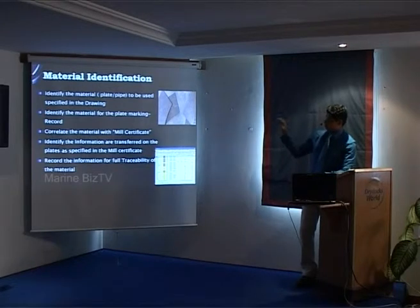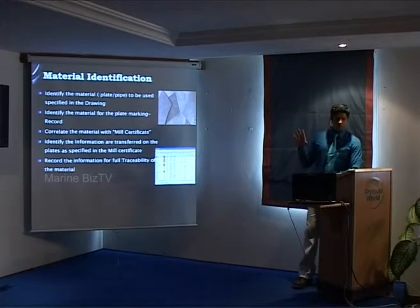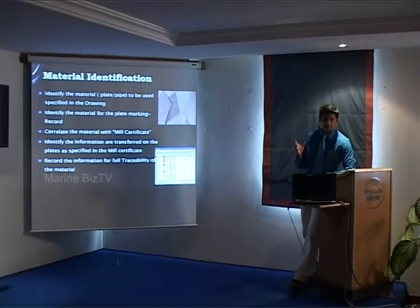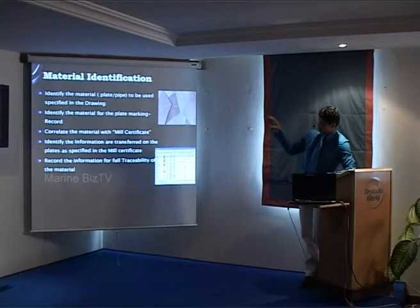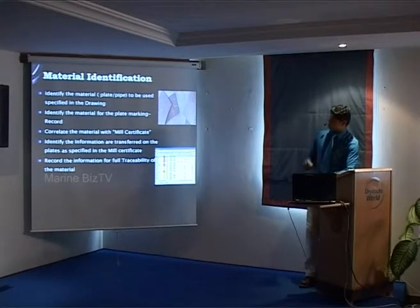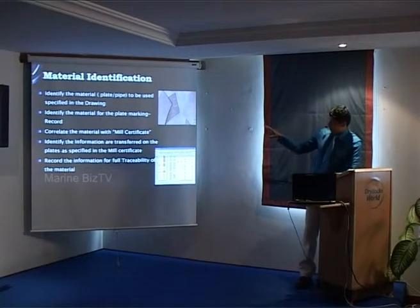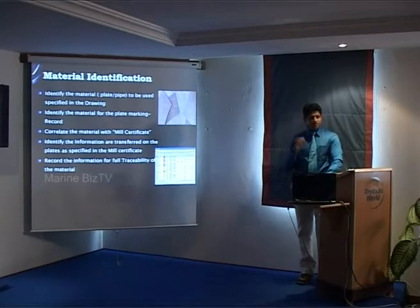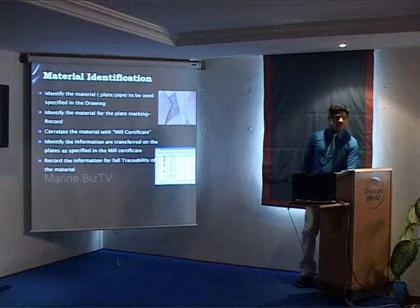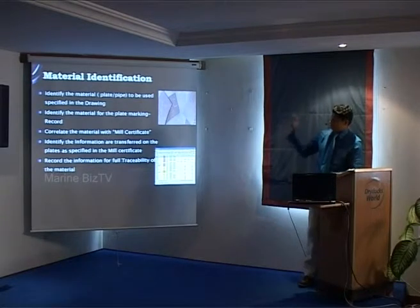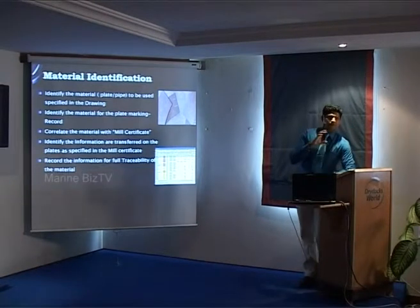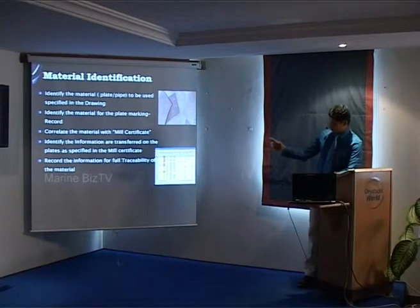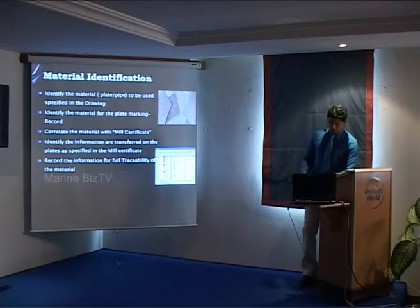Points to be looked at in material identification: first, identify the material to be used — you need to get this information from the drawing, so it is very important to look into the drawing. Identify the material with the plate marking and record it. Ensure that whatever material you receive from Dry Docks or anywhere else is marked properly so full traceability is maintained. Correlate the material with the Mill certificate to ensure the heat number on the plate matches the certificate.